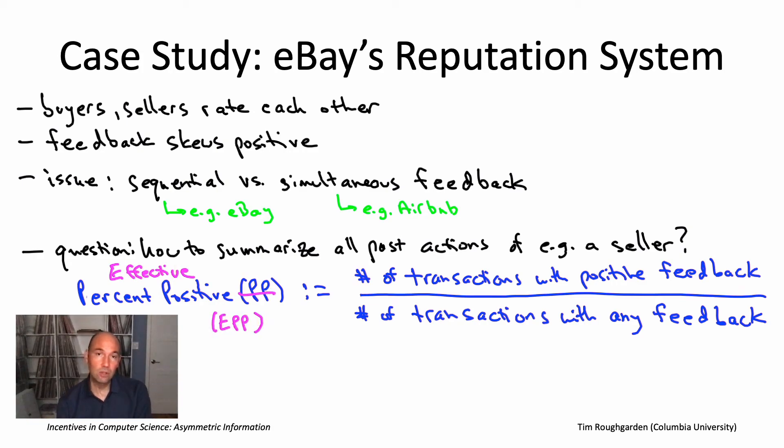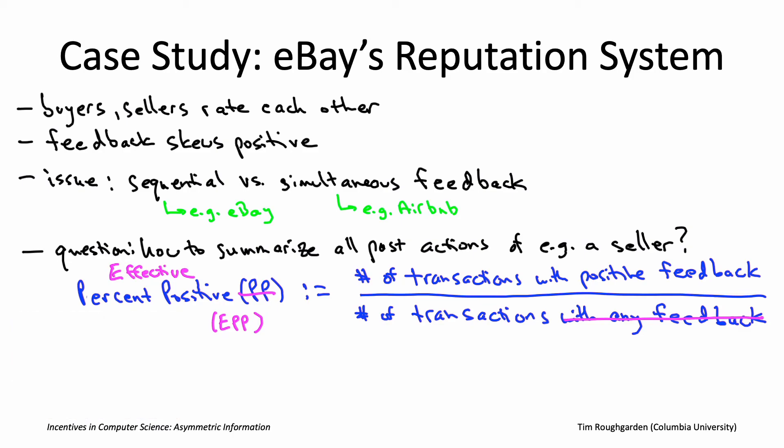In addition to PP scores, eBay introduced EPP scores — Effective Percent Positive. The only difference is the denominator: instead of only transactions that received feedback, EPP uses all transactions the seller participated in, whether or not feedback was left. This produced a much bigger spread in sellers' scores. eBay didn't make EPP scores directly visible to buyers, but used them in their search algorithm to prominently rank sellers with high EPP scores.